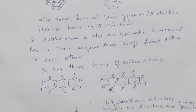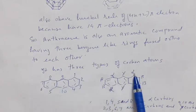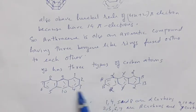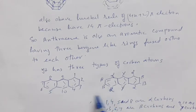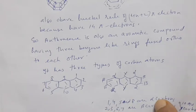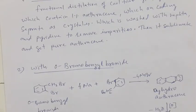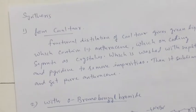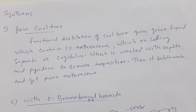The structure of anthracene shows that it has three different types of carbon atoms. Positions 1, 4, 8, 5 are alpha carbon atoms; positions 2, 3, 7, 6 are beta carbon atoms; and positions 9, 10 are known as gamma carbon atoms. So anthracene has alpha, beta, and gamma carbon atoms.